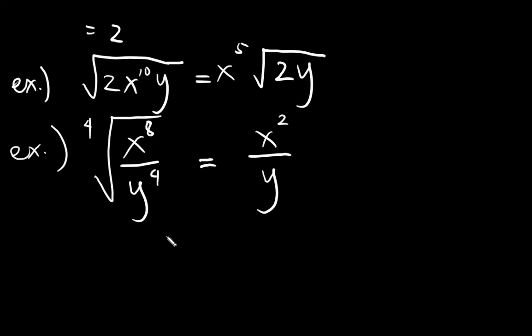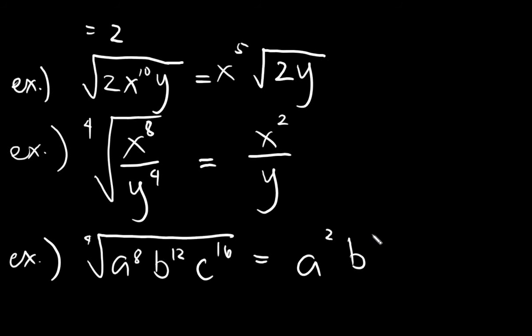And even if you will get multiple numbers inside, say I have the fourth root of a⁸b²c¹⁶. This would give you division: a squared, b cubed, c raised to 4.